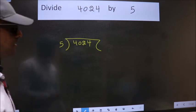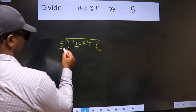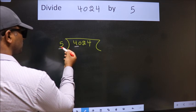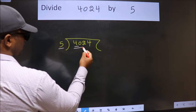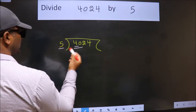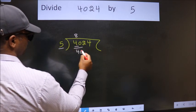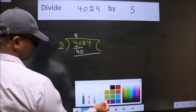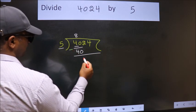Next. Here we have 4. Here 5. 4 is smaller than 5, so we should take two numbers, 40. When do we get 40 in 5 table? 5 eights is 40. Now we should subtract. We get 0.